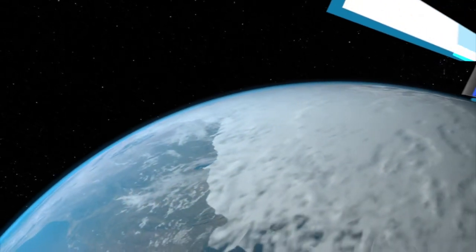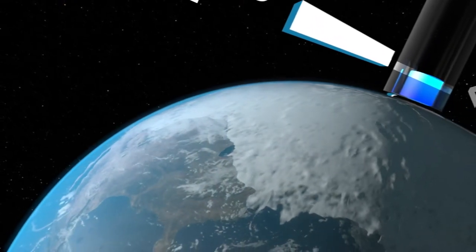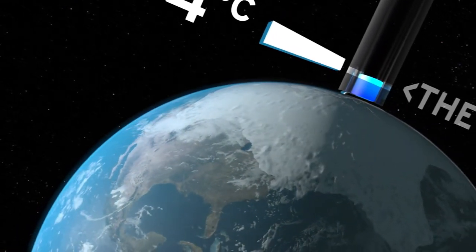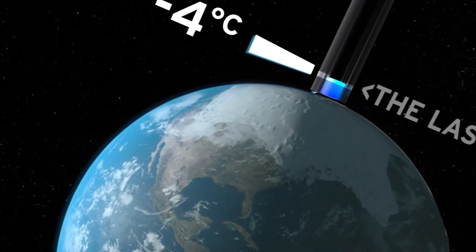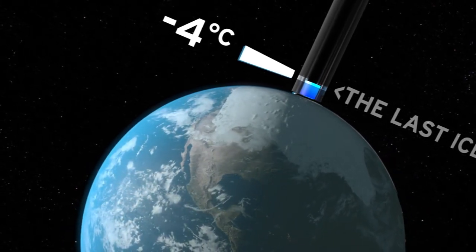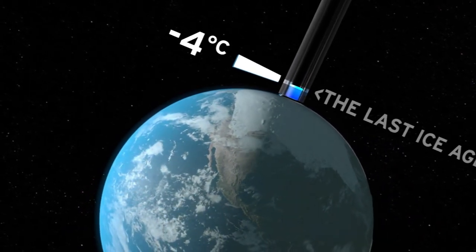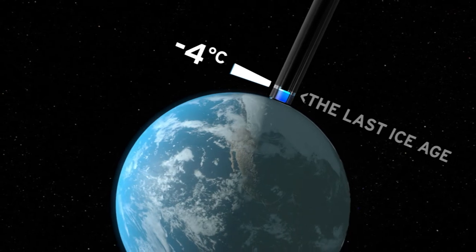Boston and Chicago were under ice, and central Pennsylvania was the frozen tundra, a real frozen tundra of permafrost and musk oxen. So 4 or 5 degrees Celsius change globally